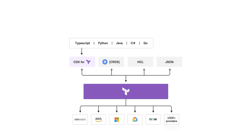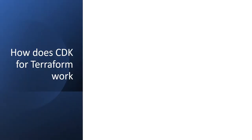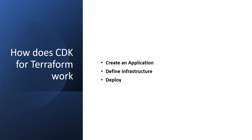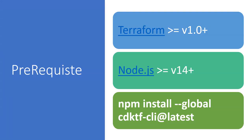CDKTF leverages CDK's concepts and libraries to translate your high-level code. You create an application from a template, choose your language, define your infrastructure, and deploy using CLI commands — it generates Terraform files. The prerequisites to use CDKTF are Terraform version greater than 1.0 and Node.js greater than 14. You also need to install the CDKTF CLI globally using Node Package Manager, similar to how you install the CDK CLI.